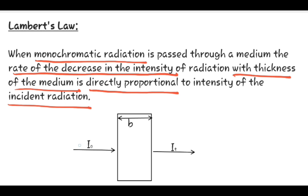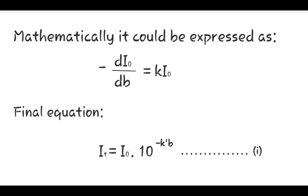Here, this is the incident radiation and this is the transmitted radiation, and this is the thickness of the medium. As the thickness of the medium increases, the intensity of the transmitted radiation decreases. Mathematically, Lambert's Law can be expressed as: the rate of decrease in the intensity with respect to the thickness is directly proportional to the incident radiation.